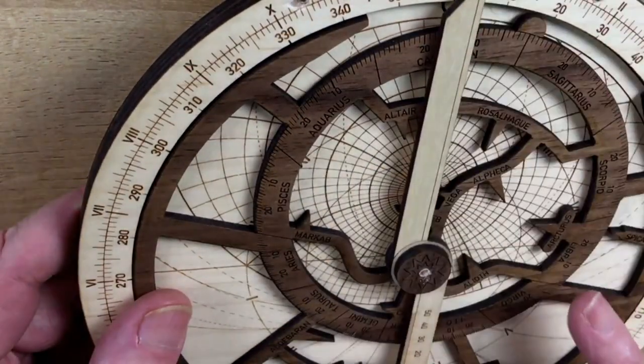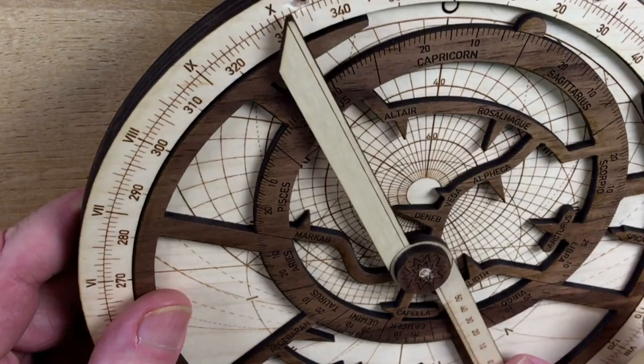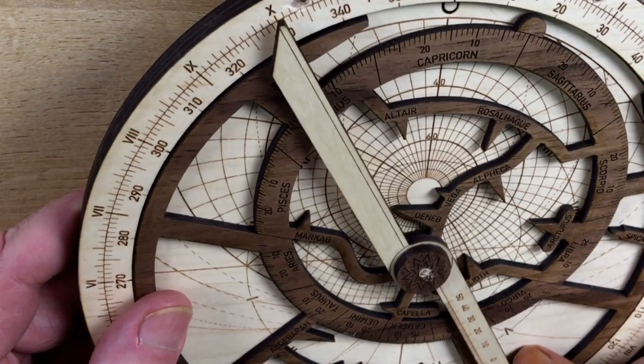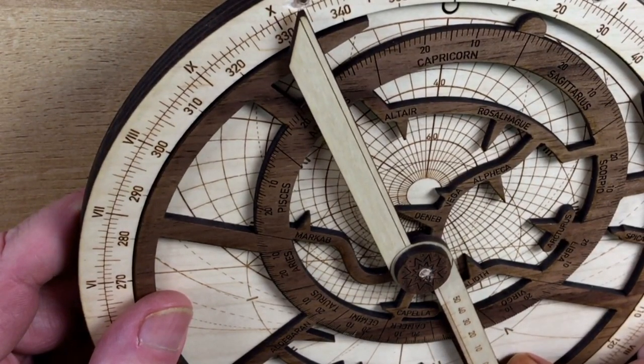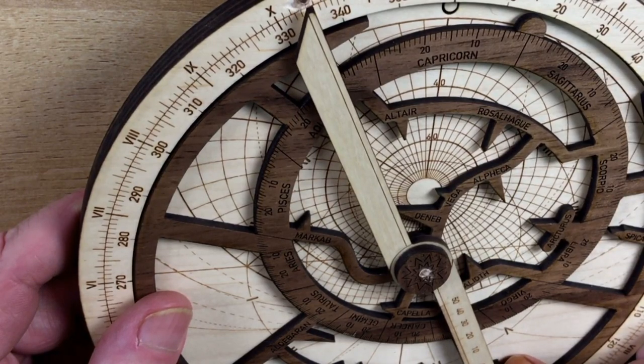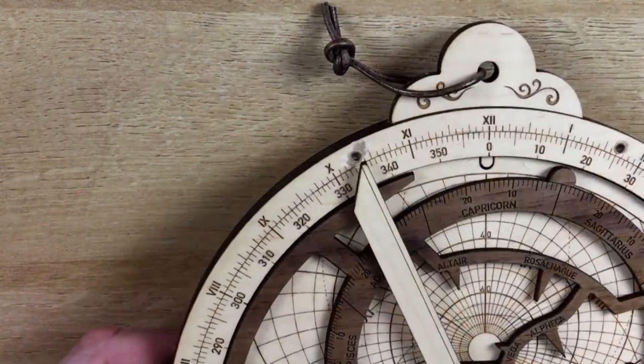Then what we do is we take our ruler, and we bring it over to the 7th of Aquarius. So there's the 10th, 9th, 8th, 7th. And then we simply read off the time. And when we do that, we find that we have 10, this is 30, it's one hash mark back, so that's 10:25 a.m.